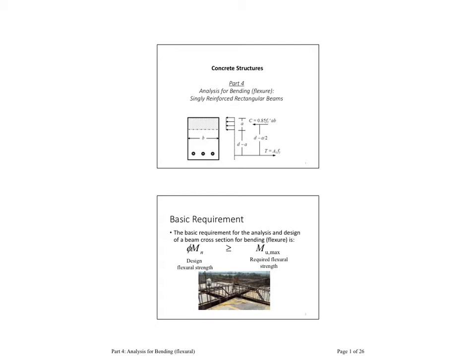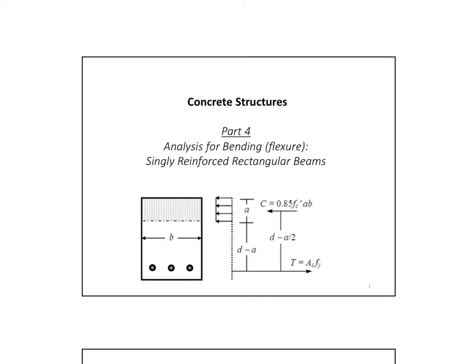Starting with part four, which is analysis for bending. The purpose of this chapter is to be able to get our capacity of a concrete member under flexure, estimate a size, maybe select the proper rebar size for a member that can resist some flexural applied load. The name of the chapter is analysis for bending for singly reinforced rectangular beams.